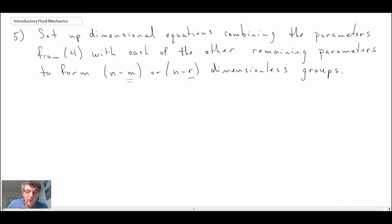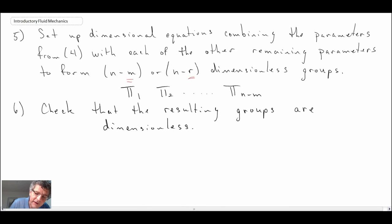We set these equations up and what we're going to get out of this is pi one, pi two, all the way up to pi n minus m. Those should all be non-dimensional and they will consist of the different variables that are important for your experiment. The final step is to do a sanity check. We check the dimensions of our resulting pi parameters. If you've done your work correctly this should happen automatically, but you always want to do a sanity check to make sure you didn't make a mistake somewhere.